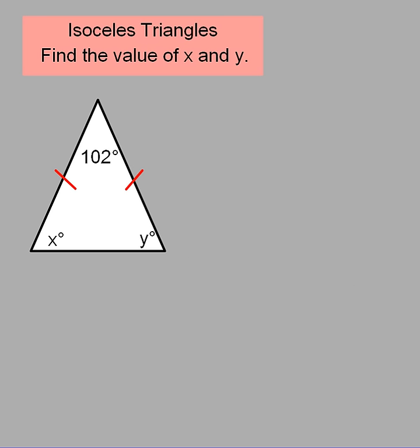All right, we're going to take a look at one of our first examples here with isosceles triangles by finding the values of x and y. Now when I take a look at this picture, I want to first zero in on this angle that we're presented with - that's my vertex angle.